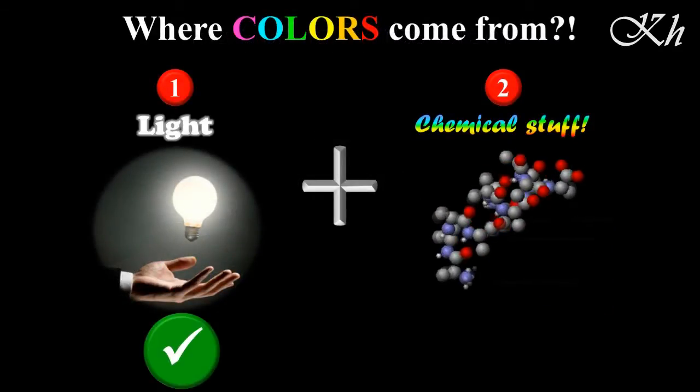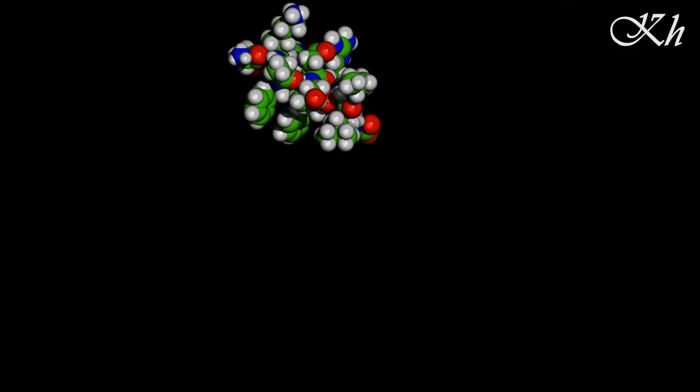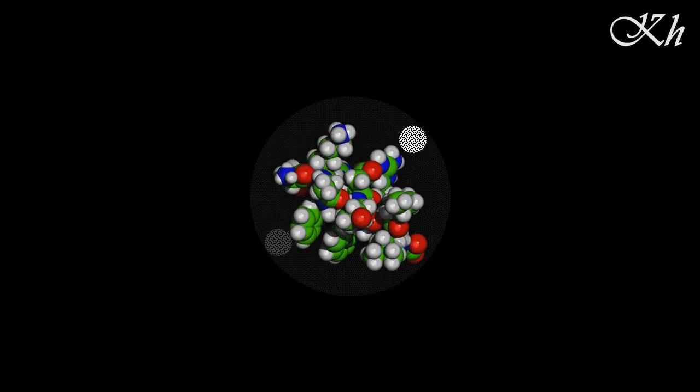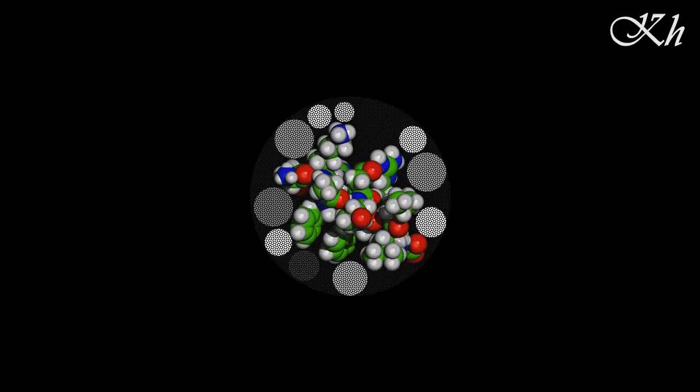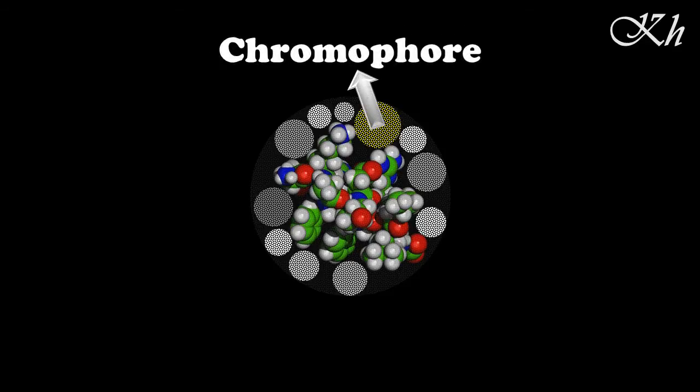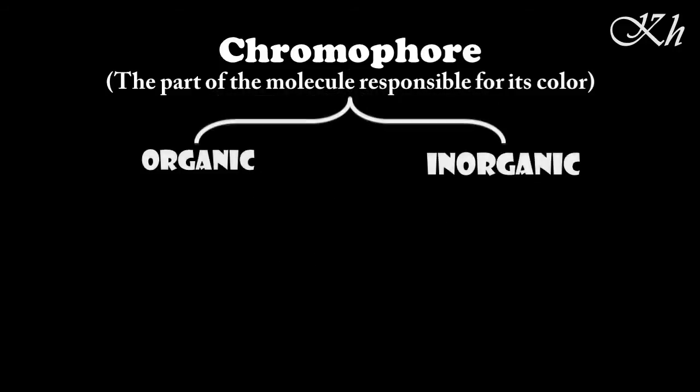Back to the molecules which are the building blocks of our universe. Basically, a molecule is a structure of several atoms surrounded by clouds of electrons. A part of these electronic clouds is called the chromophore. And this is the part of the molecule responsible for its color. And since substances are divided into organic and inorganic ones.